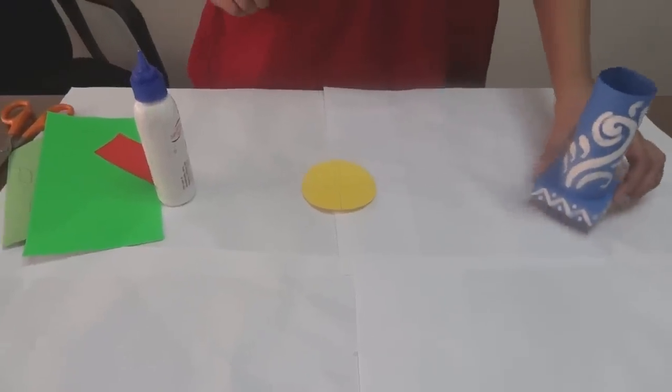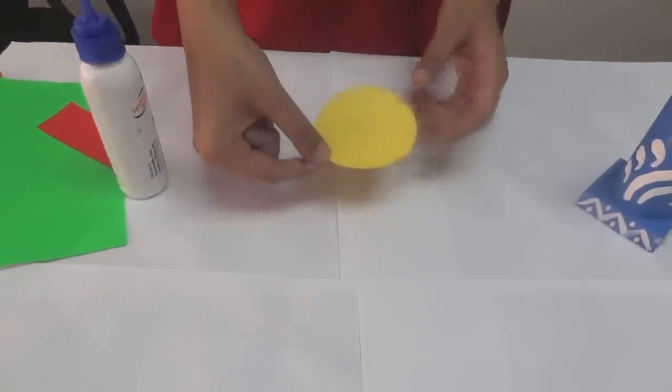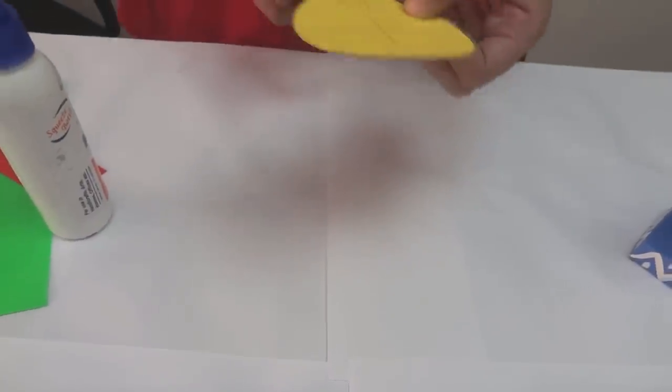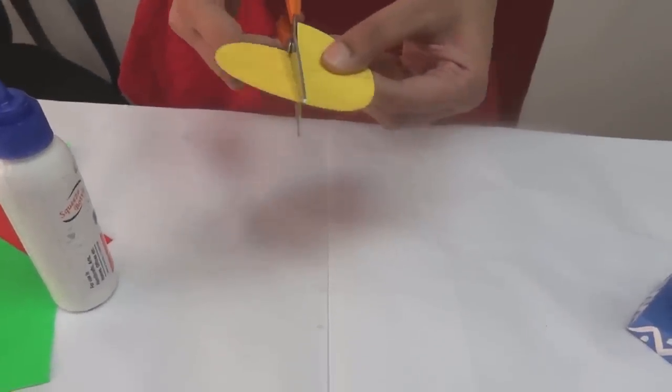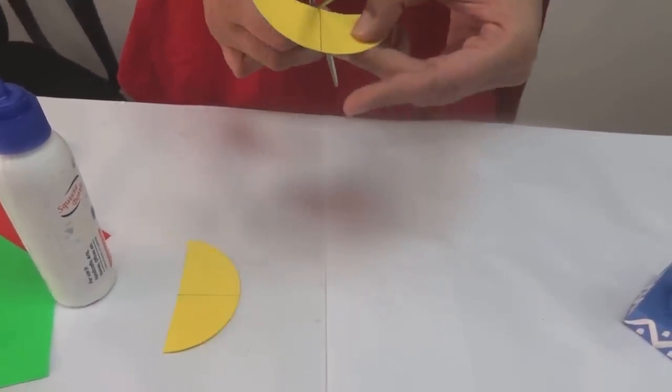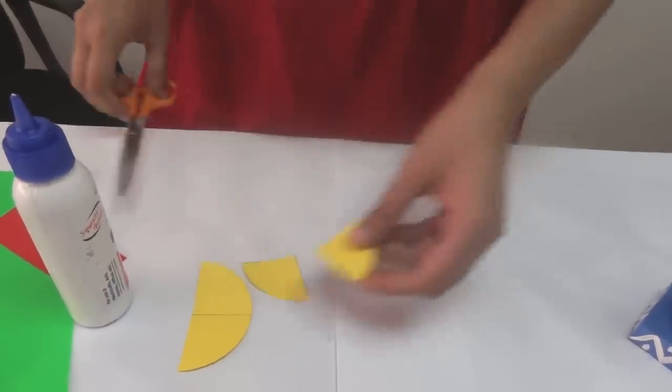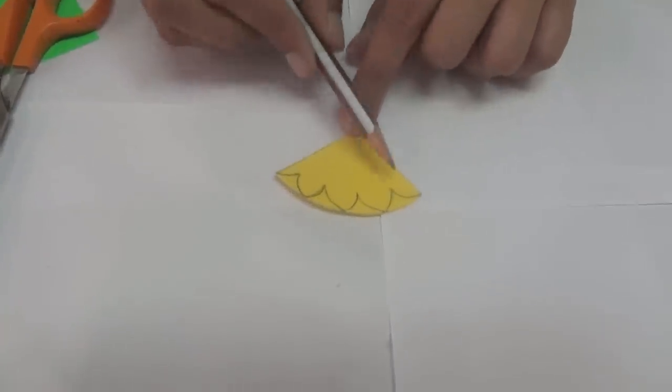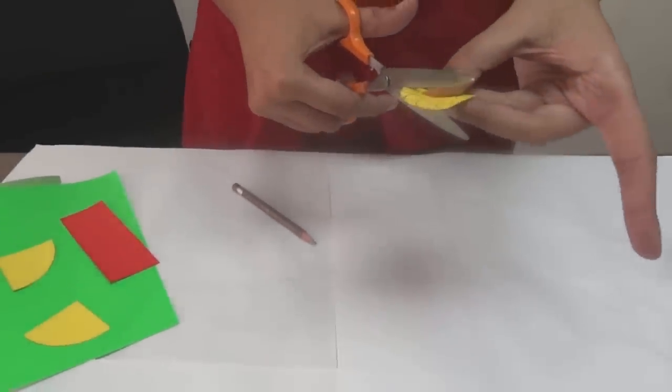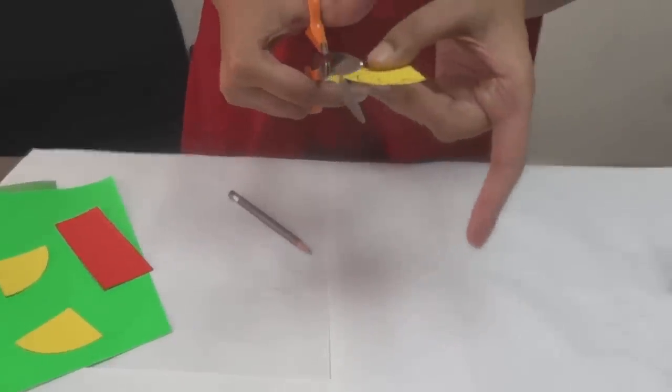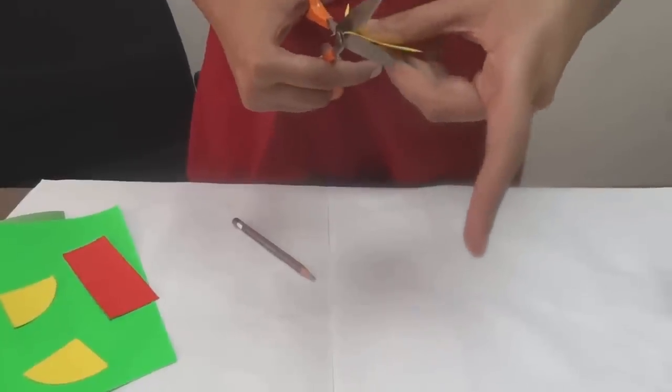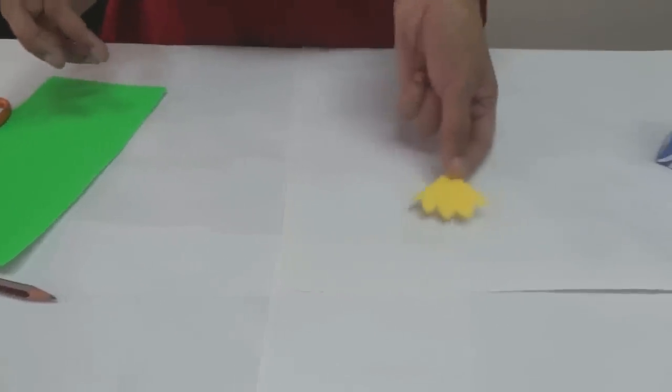Now that our pot is ready let us make flowers to put in it. For the flowers we first need a circle. Divide it into four parts. Cut it. One flower will use one fourth part of the circle. With the pencil make a design like this. Then cut it out. This is ready now.